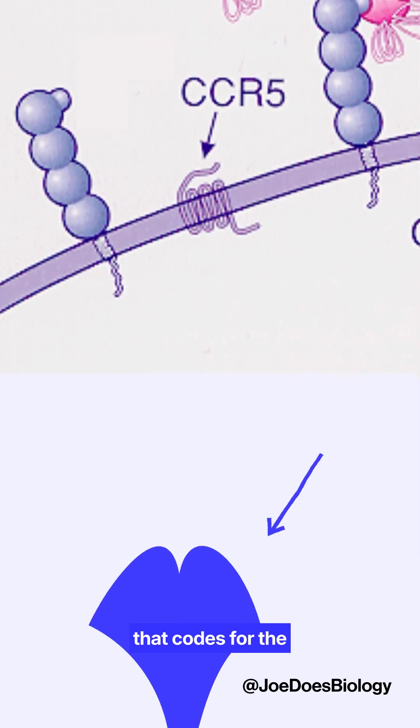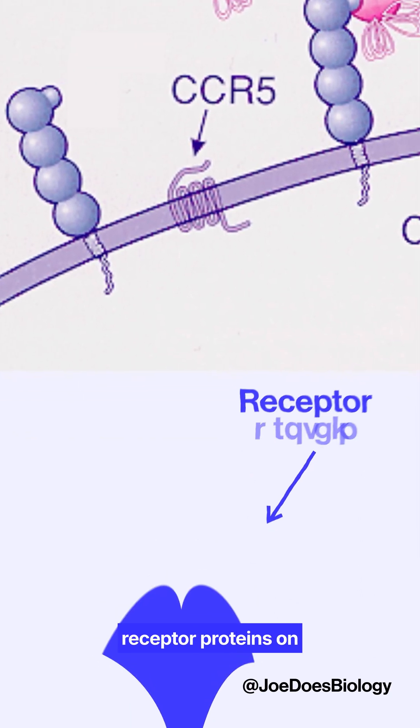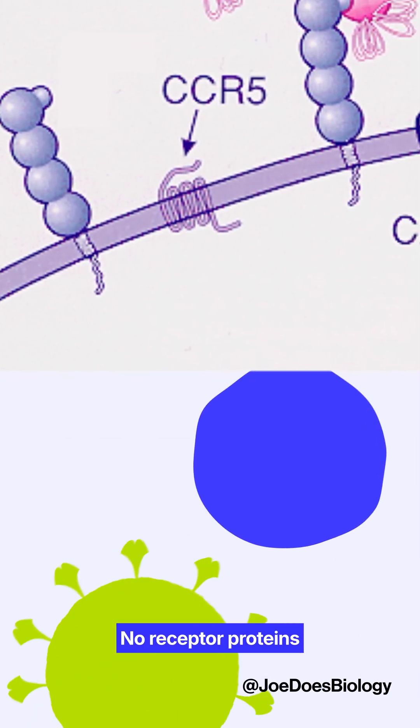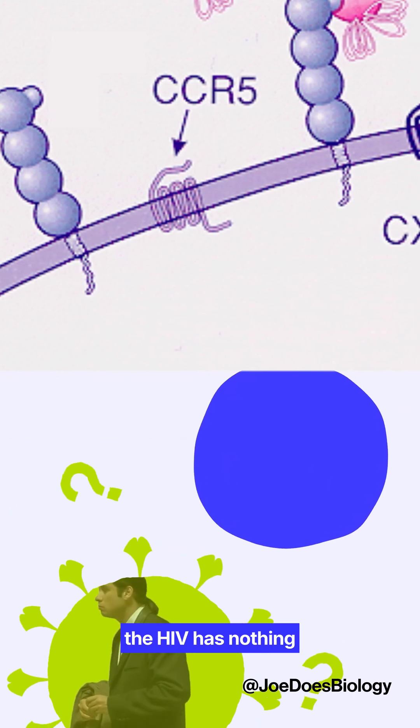Which is the gene that codes for the production of these receptor proteins on the surface of our white blood cells. No receptor proteins, the HIV has nothing to attach to.